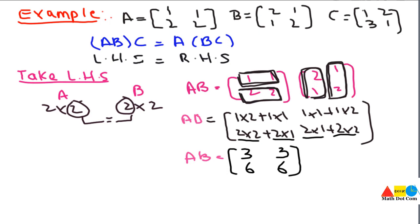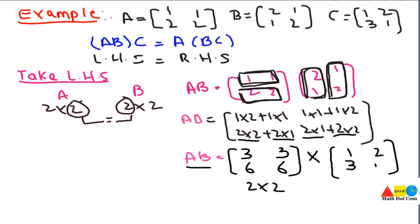Now we have to multiply this result with C. C = [1,3; 2,1]. Again we have to check whether the columns of AB are equal to the rows of C. AB is 2×2 and matrix C is also 2×2, so columns and rows are equal. They are suitable for multiplication.